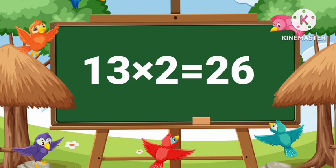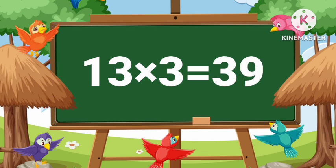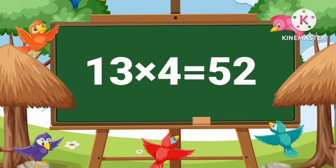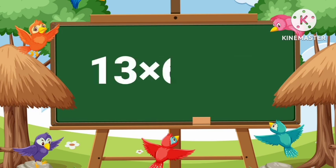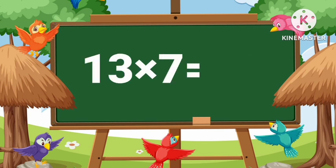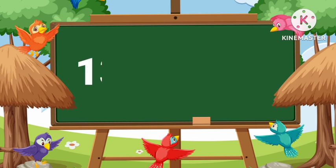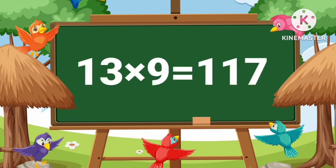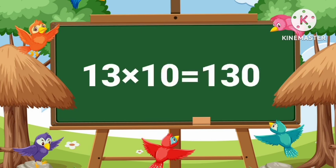Thirteen ones are thirteen. Thirteen twos are twenty-six. Thirteen threes are thirty-nine. Thirteen fours are fifty-two. Thirteen fives are sixty-five. Thirteen sixes are seventy-eight. Thirteen sevens are ninety-one. Thirteen eights are one hundred four. Thirteen nines are one hundred seventeen. Thirteen tens are one hundred thirty.